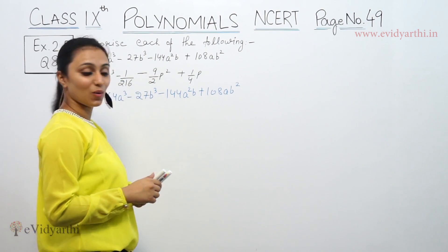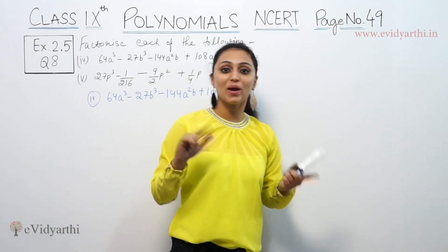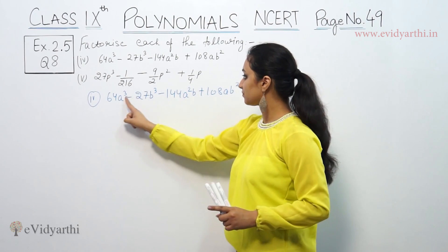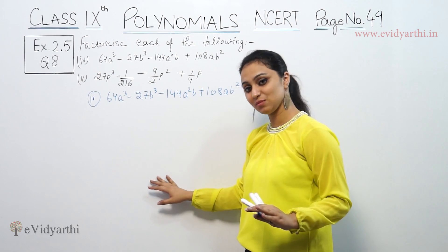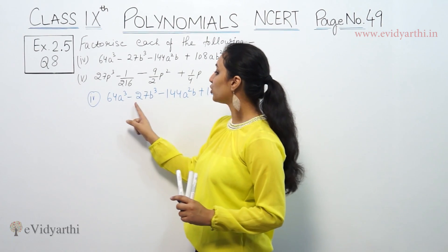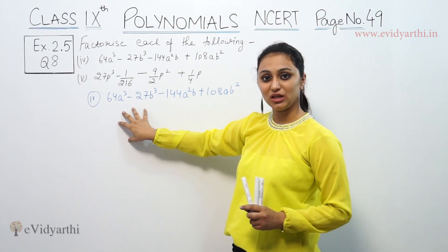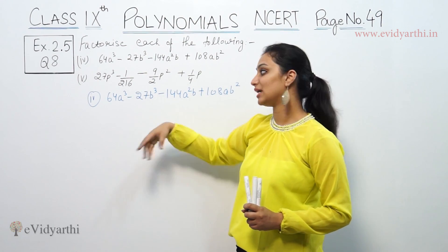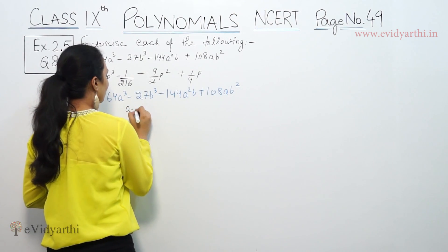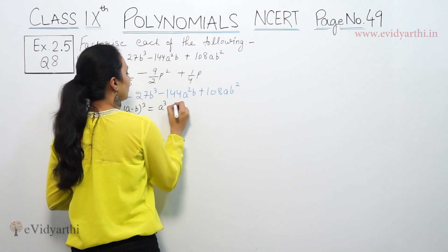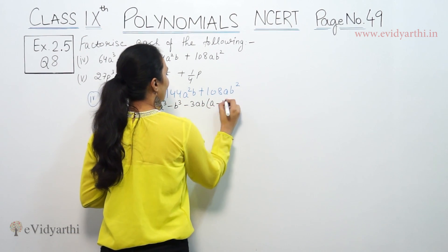Here you can see there are cubes. The cube identity involves a plus b whole cube or a minus b whole cube. Since a³ and b³ both have a negative sign, a minus b whole cube is better. The formula for (a - b)³ is a³ - b³ - 3ab.